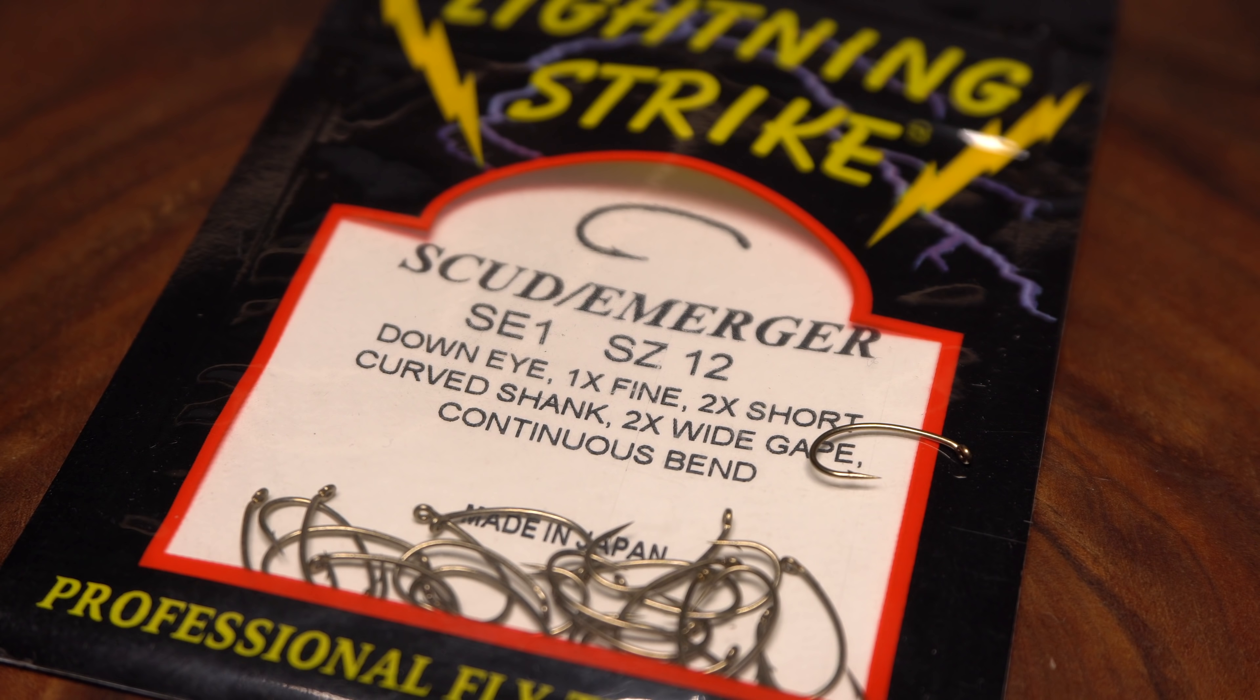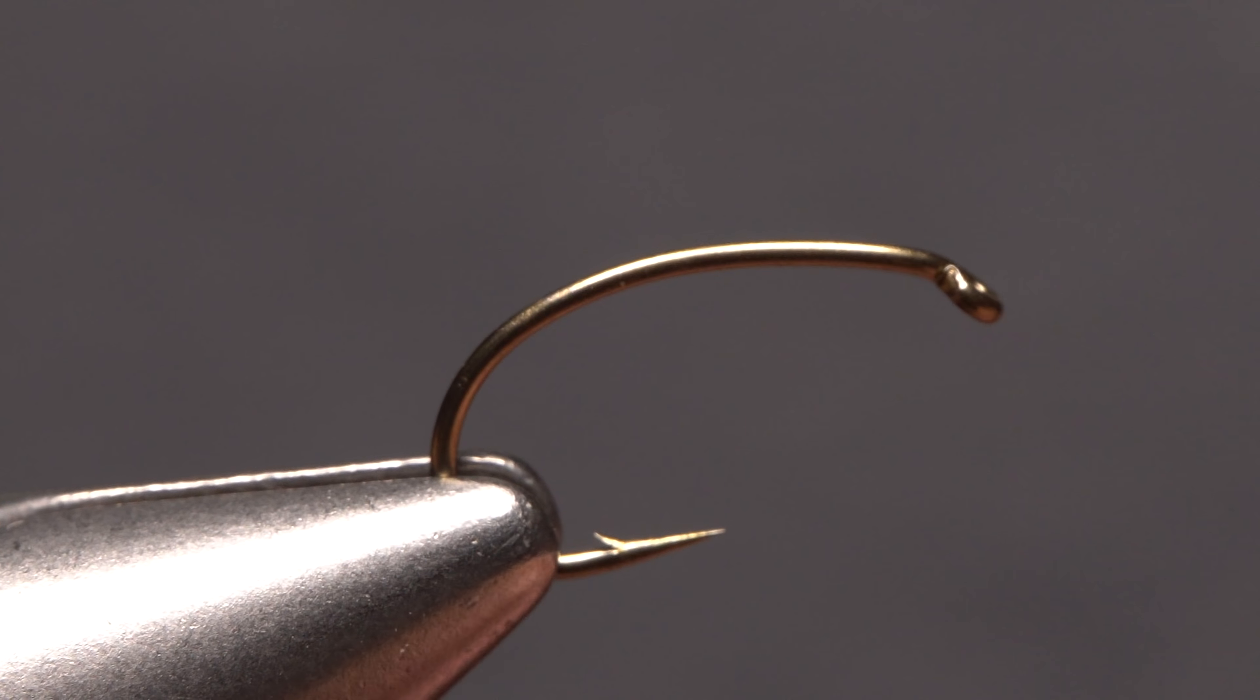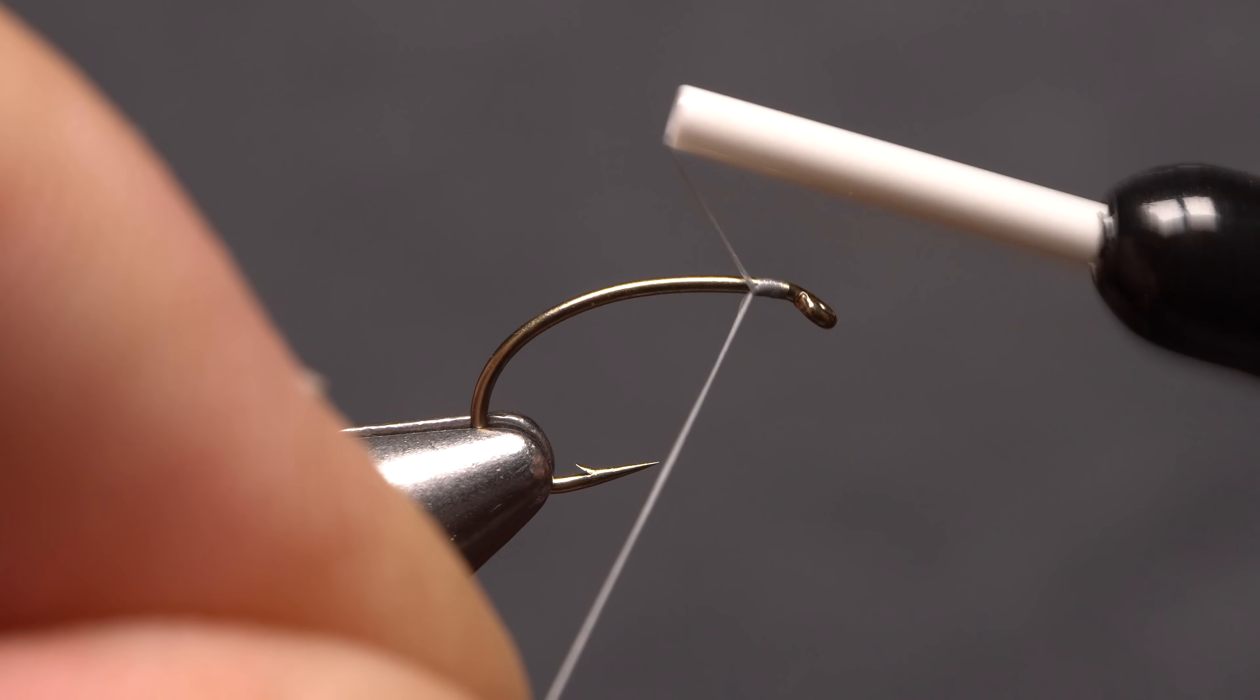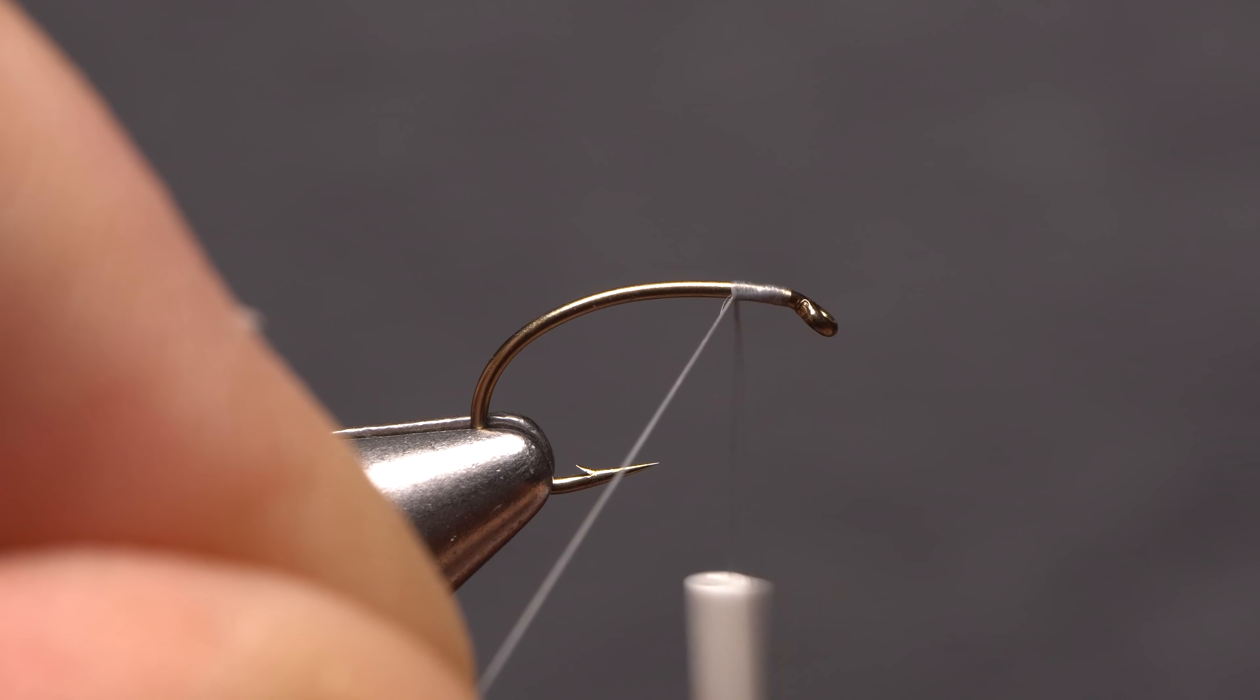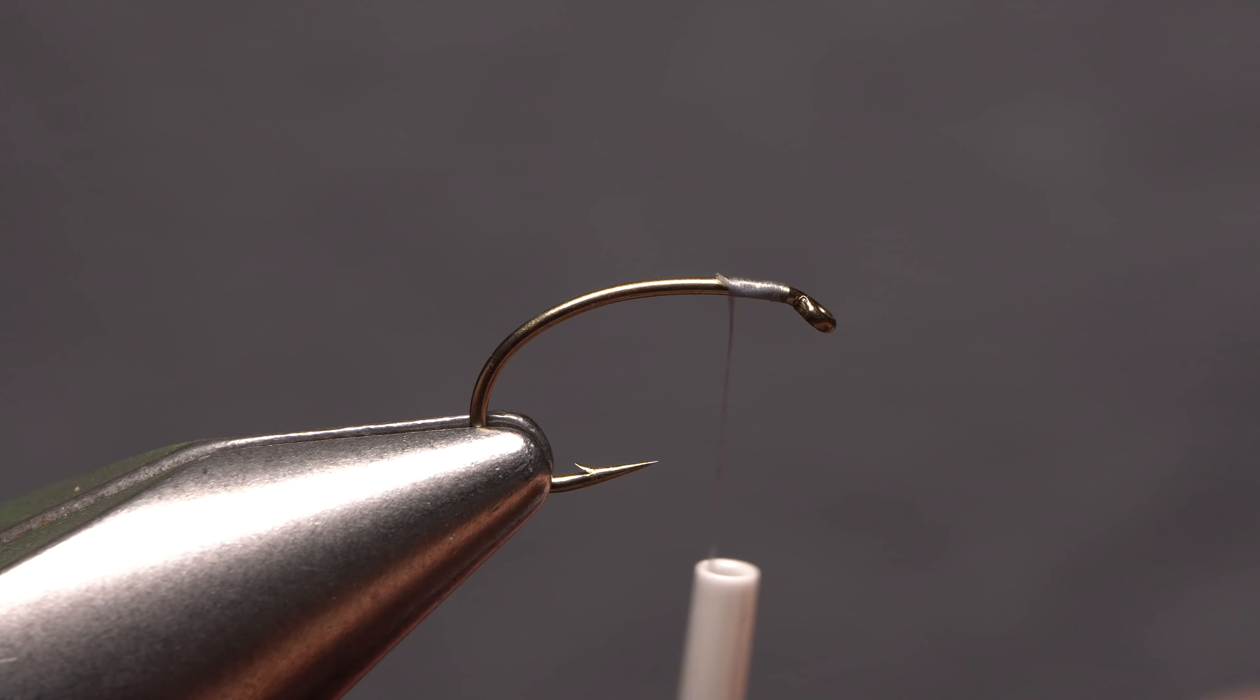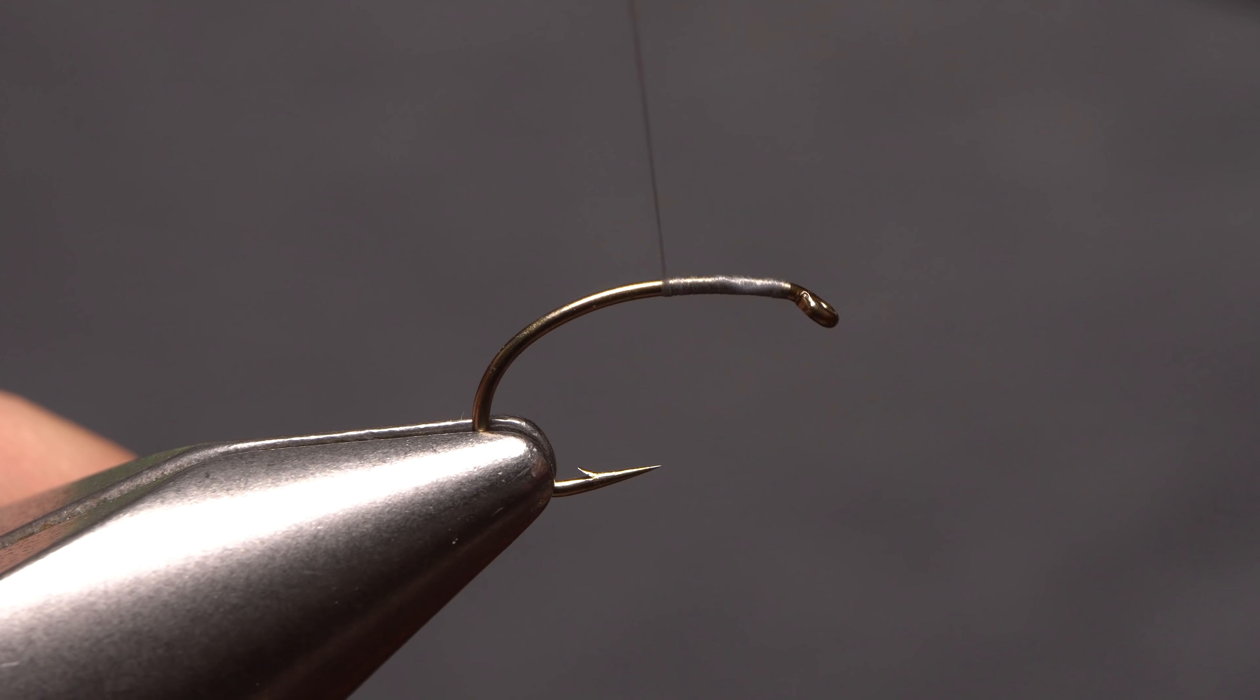For a hook, I'm going to use a Lightning Strike SE1 in size 12. After getting the hook firmly secured in the jaws of your tying vise, once again pick up your bobbin and this time, get your thread started on the hook shank at the back edge of the eye and take a few wraps rearward before snipping off the excess tag. Continue taking thread wraps down the hook shank until your thread hangs at about the point.